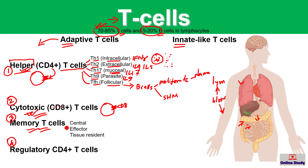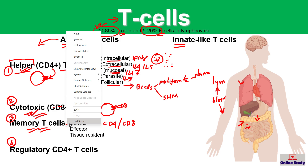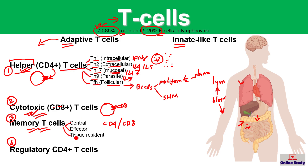Memory T cells are produced from CD4 or CD8 T cells. After an infection they survive in our body to prevent future infection with a similar virus or bacteria. There are three main types: central memory, effector memory, and tissue-resident memory. Central memory T cells circulate in the body. Effector memory T cells go directly into action when a virus or bacteria attacks. Tissue-resident memory T cells migrate to different tissues such as the lung, intestine, or skin and stay there after infection.